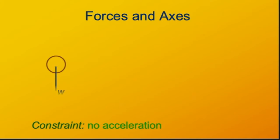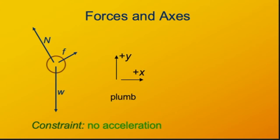First we've got its weight acting downward, which is proportional to its mass. Then there are two surface forces, two contact forces: the normal force, which is perpendicular to the surface, and a frictional force. In this case the frictional force has to be acting uphill because it's preventing the block from sliding downhill, which gravity would try to make it do. We can model this with vertical and horizontal coordinates — I like to call them plum coordinates — but it turns out to be mathematically much simpler to use inclined coordinates.